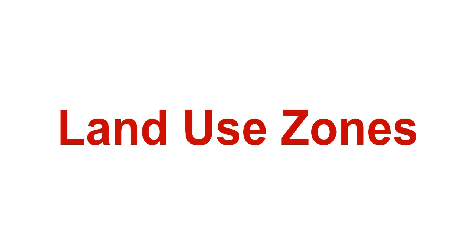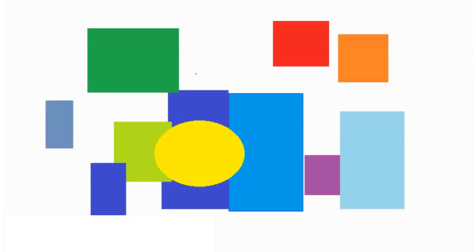Hello and welcome to my video on urban settlements. We're going to be looking at urban areas — being cities and towns — and what can be found in each of those. In this video we'll be looking at different land use zones that you can find within a city, these being areas that have a specific purpose and areas that we are familiar with in our cities.